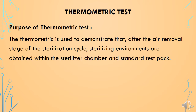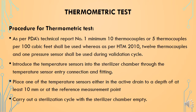The next qualification test is the thermometric test. Its purpose is to demonstrate that after the air removal stage of the sterilization cycle, sterilizing conditions are obtained within the sterilizer chamber and the standard test pack. As per the previous technical report, a minimum of 10 thermocouples or 5 thermocouples per 100 cubic feet shall be used, whereas as per HTM 2010 (now known as EN 285), 12 thermocouples and more than one pressure sensor shall be used during the validation cycle.